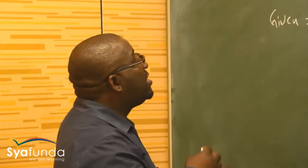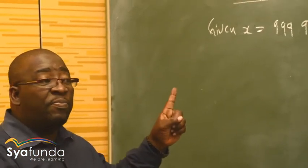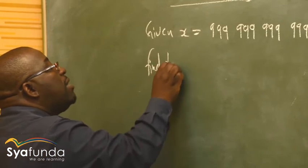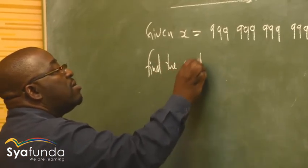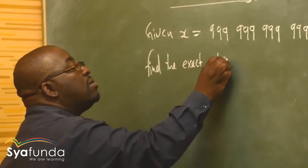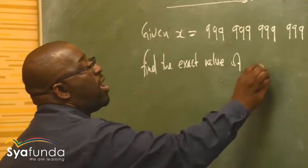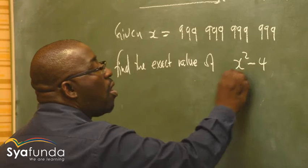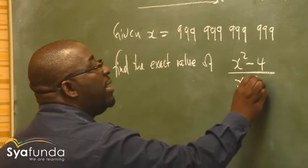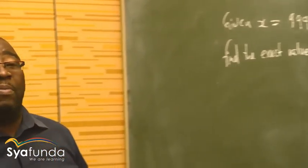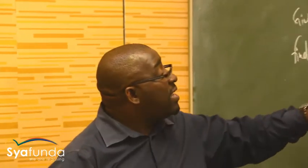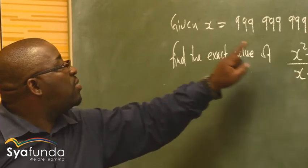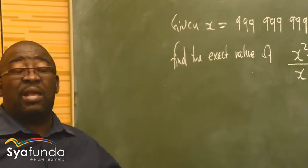The question asks us to find the exact value of (X² - 4) all over (X - 2). We've been given that value of X, but we can't simply punch it in. This takes us back to grade 8, grade 9 concepts.